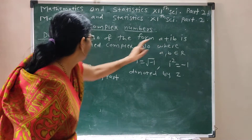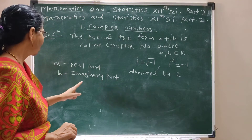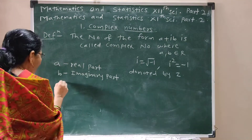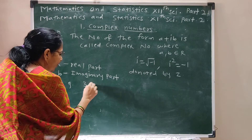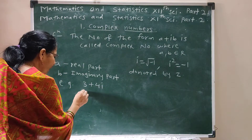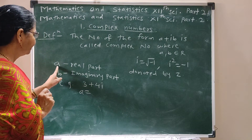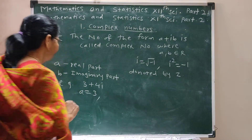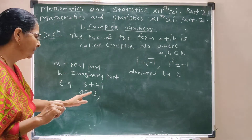A is called the Real Part, B is called the Imaginary Part. For example, if we take 3 plus 4i, then A — that is the Real Part — is 3.